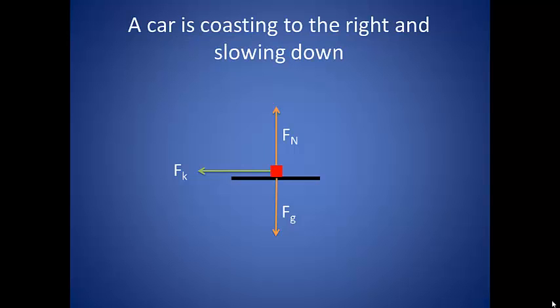Notice that the vertical forces are balanced, which makes sense because there is no vertical acceleration. However, the horizontal forces are unbalanced. Our rightward moving car is slowing down, which means there is an acceleration to the left. This is shown in the force diagram by a higher magnitude force arrow in that direction.